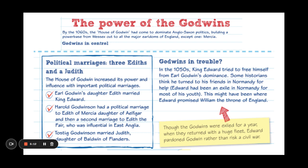Harold Godwinson also went one step further through political marriages. Earl Godwin's daughter Edith married King Edward, meaning in theory the next heir would be Godwin's grandchild — Harold Godwinson's nephew. Harold Godwinson also had a political marriage to Edith of Mercia, daughter of Alfgar, and a second marriage to Edith the Fair, who had influence in East Anglia. These marriages gave the Godwins significant power over East Anglia and Mercia. And Tostig Godwinson married Judith, daughter of Baldwin of Flanders, securing important international connections to ensure neighbours wouldn't interfere in any conflict.